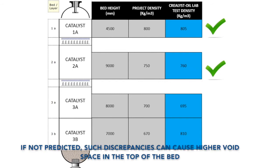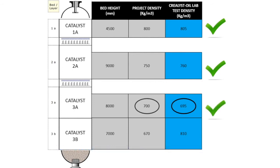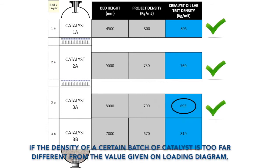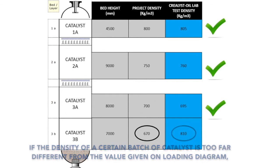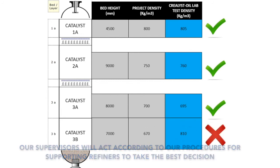If not predicted, such discrepancies can cause higher void space in the top of the bed or a smaller quantity of catalyst loaded. If the density of a certain batch of catalyst is too far different from the value given on the loading diagram, our supervisors will act according to our procedures for supporting refiners to take the best decision.